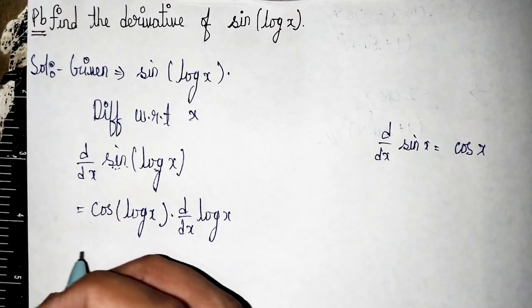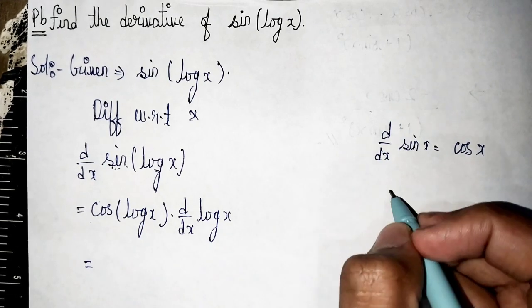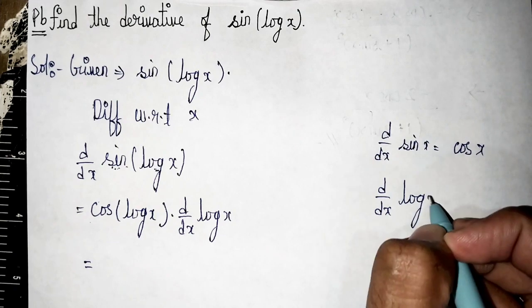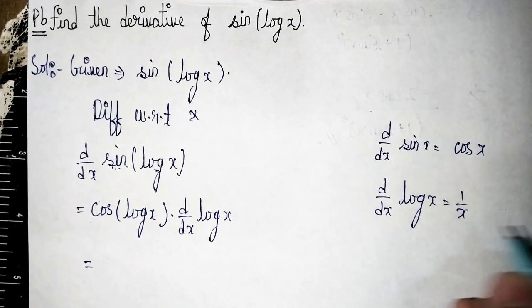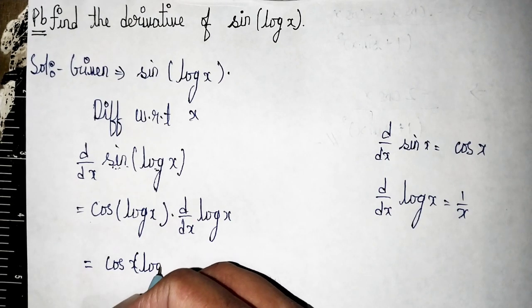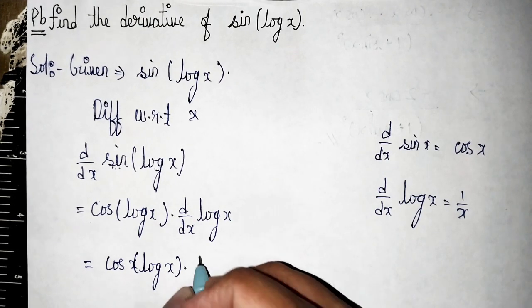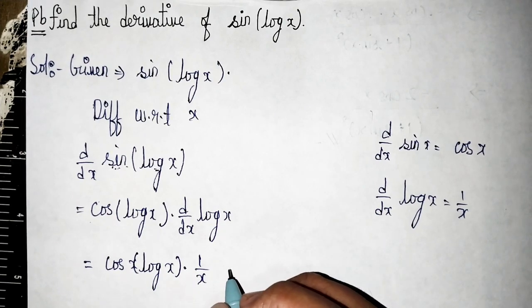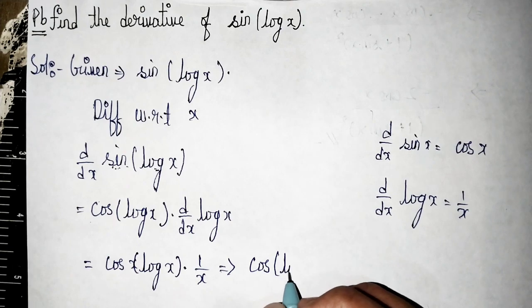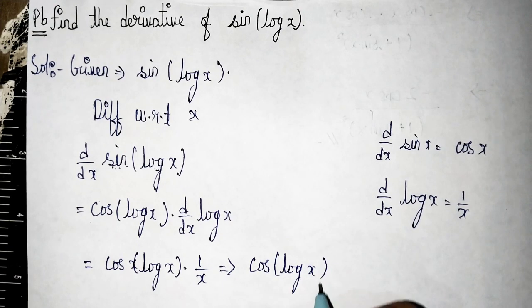Now applying the formula: d/dx of log x equals 1/x. So we have cos(log x) times 1/x. Therefore, our final answer is cos(log x)/x.